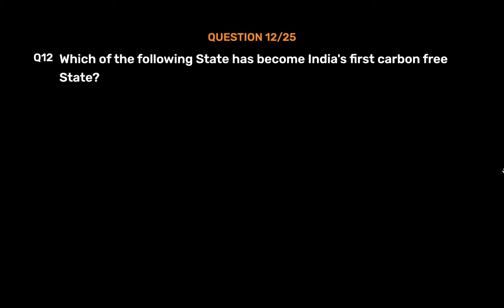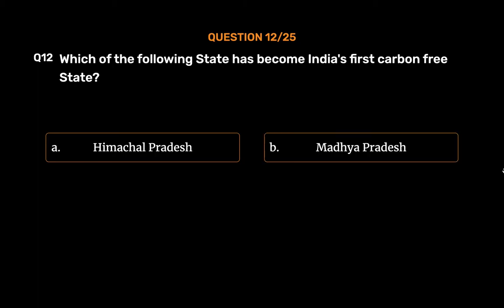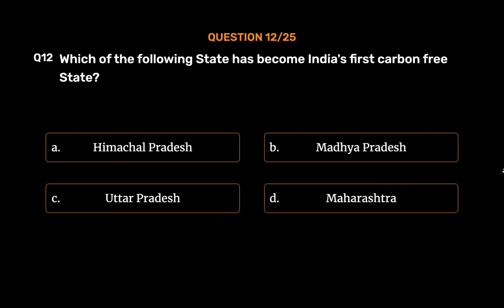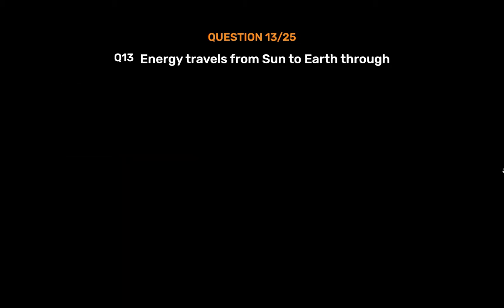Question No. 12. Which of the following states has become India's first carbon-free state? Option A: Himachal Pradesh. Option B: Madhya Pradesh. Option C: Uttar Pradesh. Option D: Maharashtra. The correct answer is Option A: Himachal Pradesh. Himachal Pradesh, which has mandated all government departments to begin environment audit, is on its way to becoming the country's first and the world's second carbon-free state. People of Himachal will be expected to undergo lifestyle changes, according to the Environment Master Plan and Policy and Strategy on Climate Change and Harnessing Carbon Credits.